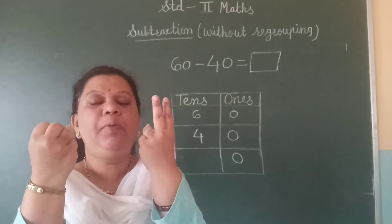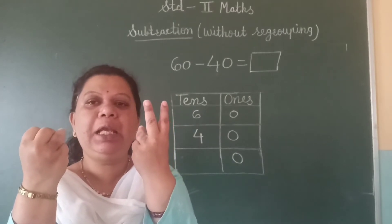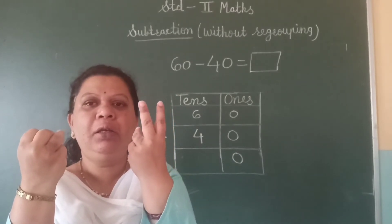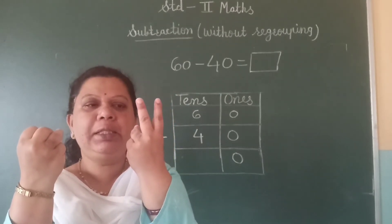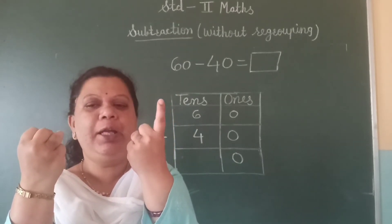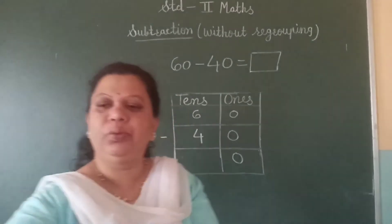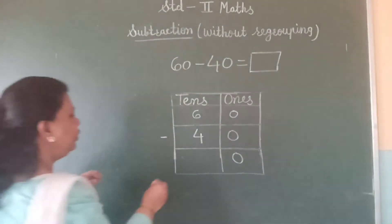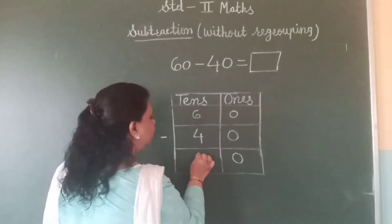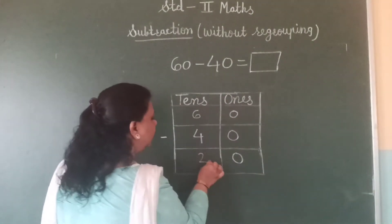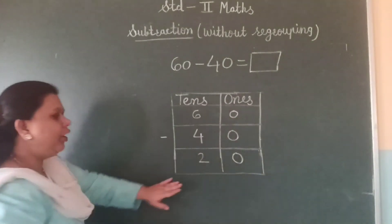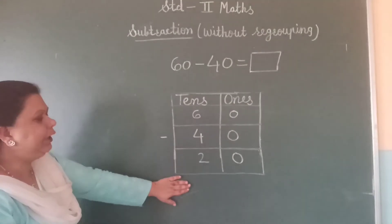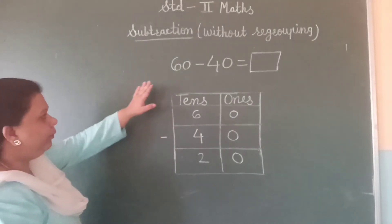Let us count — one, two. So, the answer is two. Here, we got the number twenty.